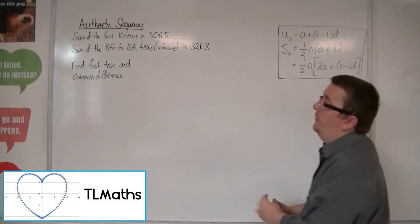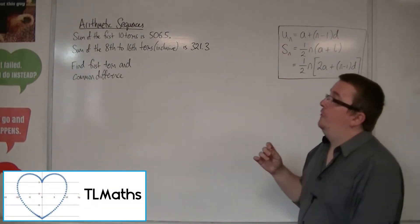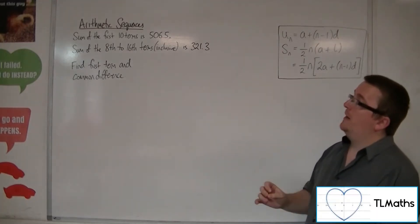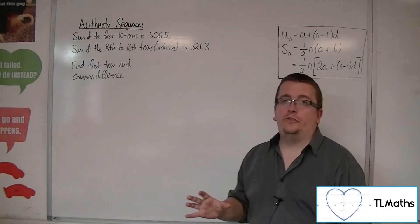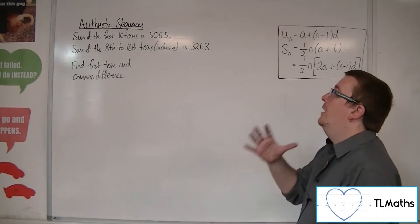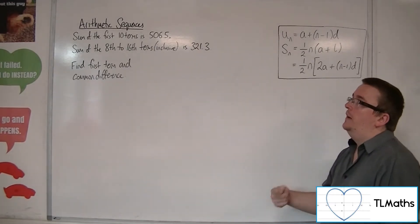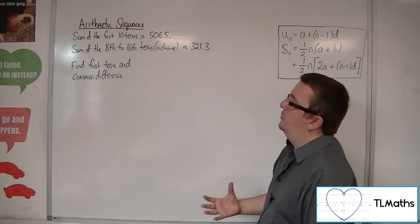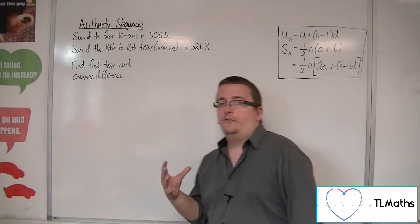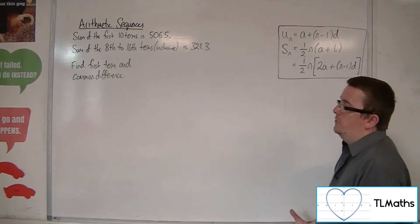Okay, so let's say I've been given this information: that the sum of the first 10 terms of an arithmetic series is 506.5, whereas the sum of the 8th to the 16th terms inclusive is 321.3, and I need to find the first term and the common difference.